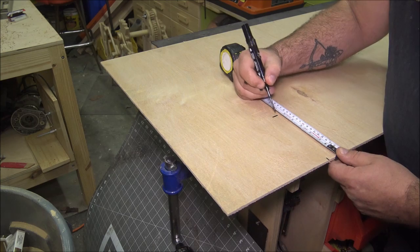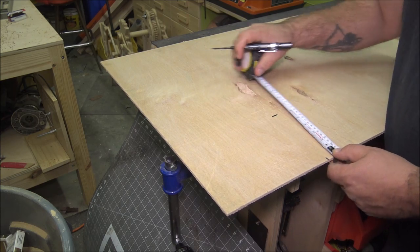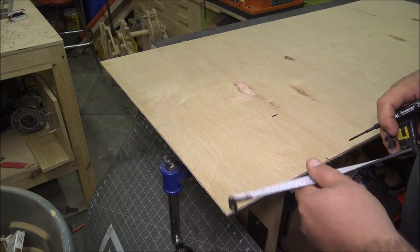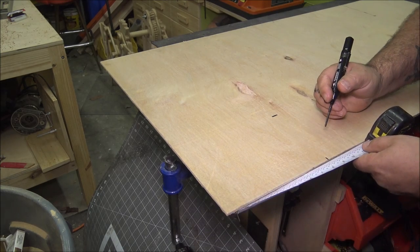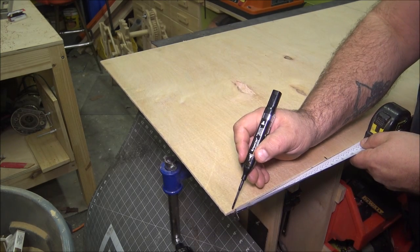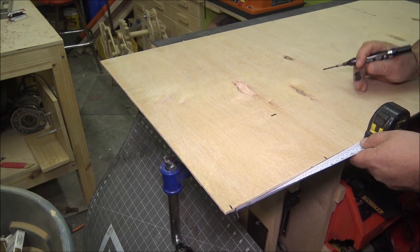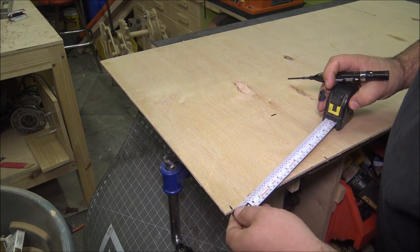If you need to find a 90 degree plane in an open area, put your mark where you need to find the plane, measure up six inches, and then from the original mark measure over eight inches, and then from those two marks measure ten inches.